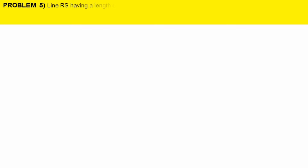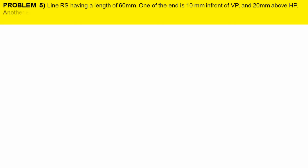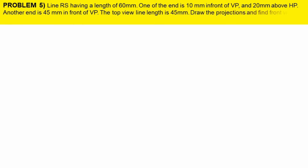Line RS having a length of 60 mm. One end is 10 mm in front of VP and 20 mm above the HP. Another end is 45 mm in front of VP. The top view line length is 45 mm. Draw the projections and find the front view length and end projector distance. Also find the trace.